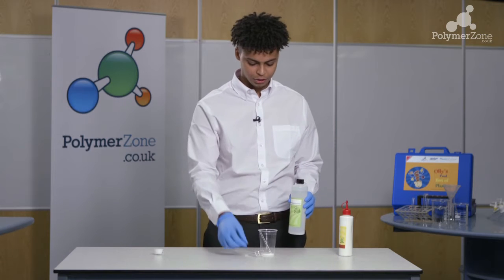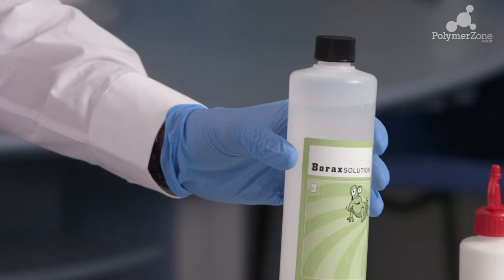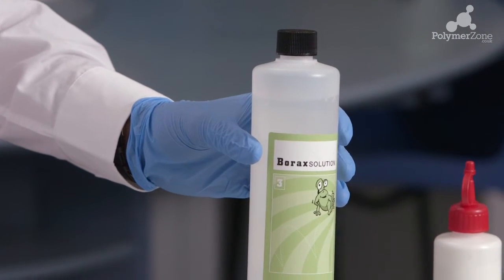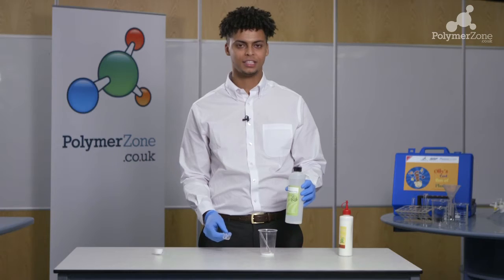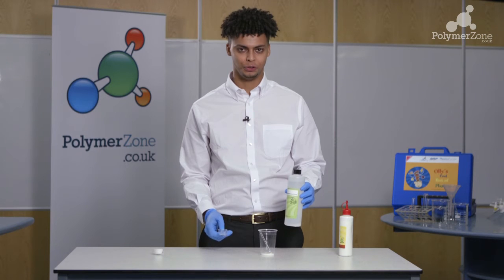I now take a clean measuring spoon and my borax solution. We're going to be measuring two spoons worth into the plastic cup, essentially double the amount of PVA that you use.